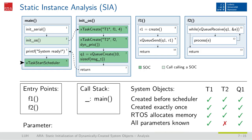Thereby, we reach the end of the control flow of the main function. The analysis of this entry point is now complete and we can continue with the open entry point list. The function f1, which is the next on our entry point list, does not contain any system object creation relevant call sites. Hence, we skip over and end this analysis for this function. The same is the case for f2, so our analysis is now complete.